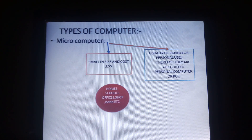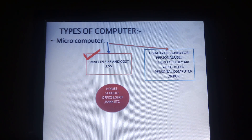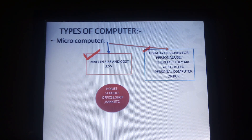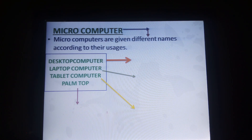The types of computer — one of the types is microcomputer. Microcomputer is small in size and cost is less, and usually designed for personal use. Therefore, they are also called the personal computer or PC. Microcomputers are basically used in home, school, office or bank, etc. Microcomputers are given different names according to their uses.